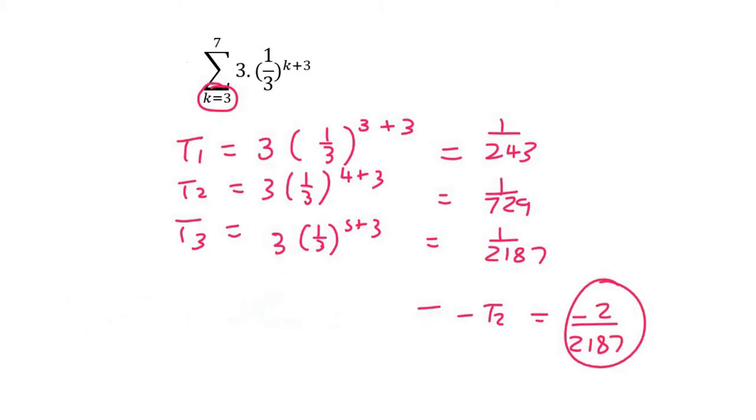So then possibly it could be geometric. For it to be geometric, we'd have to look at t2 divided by t1, and let's see what we get there. A third.